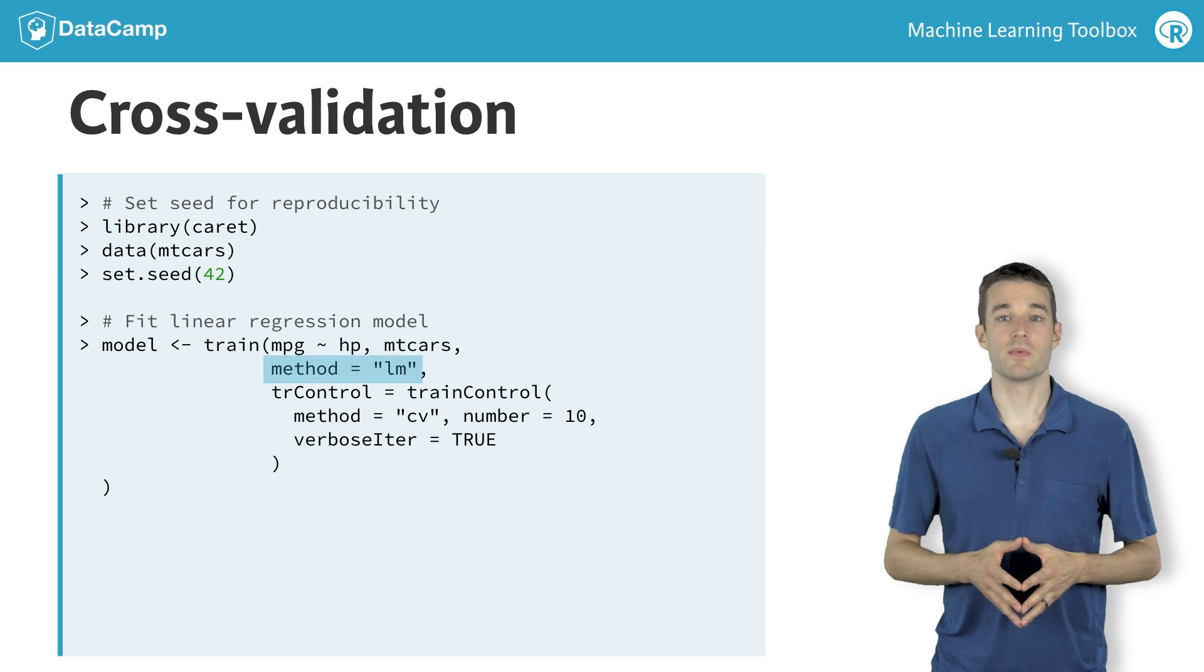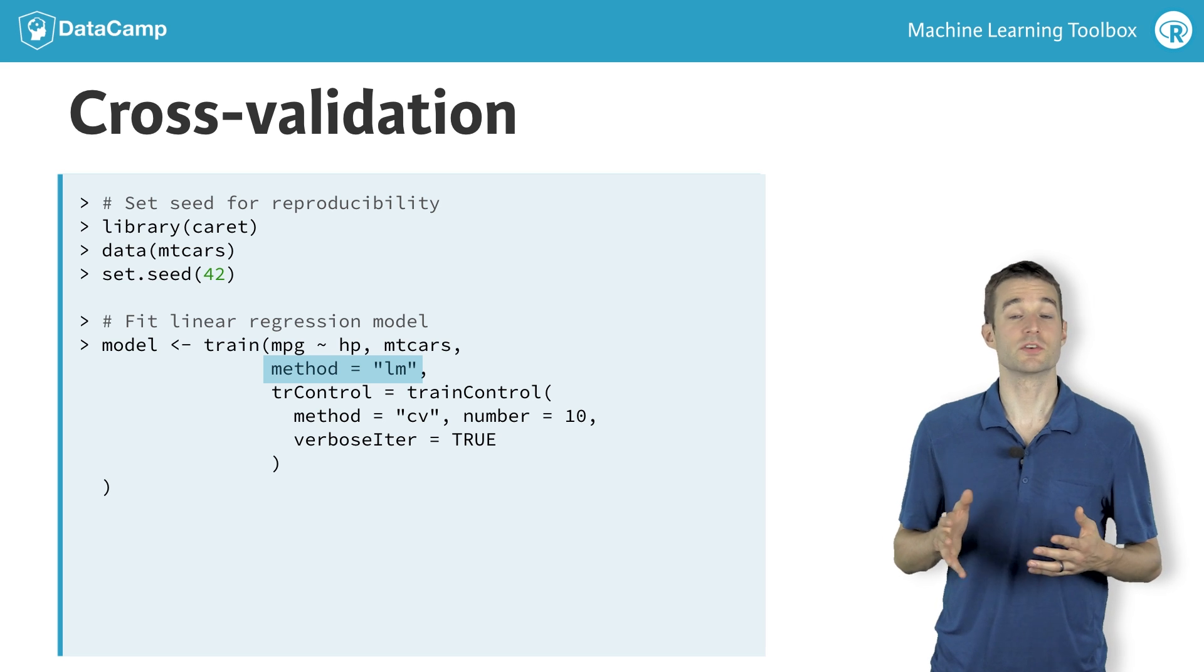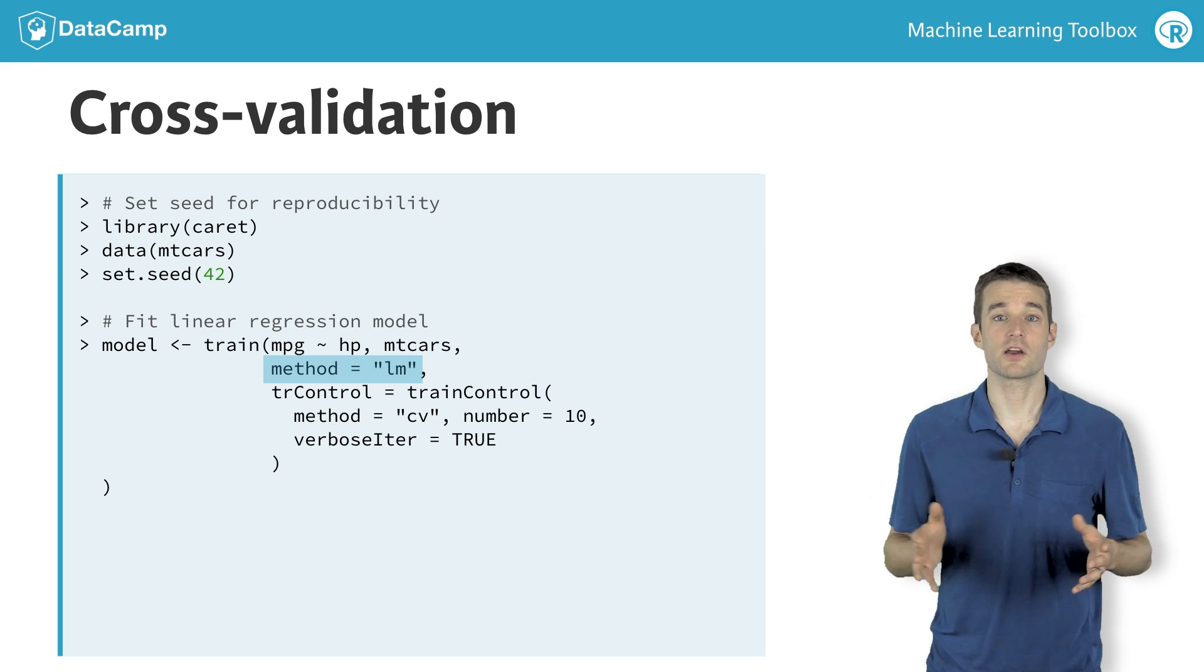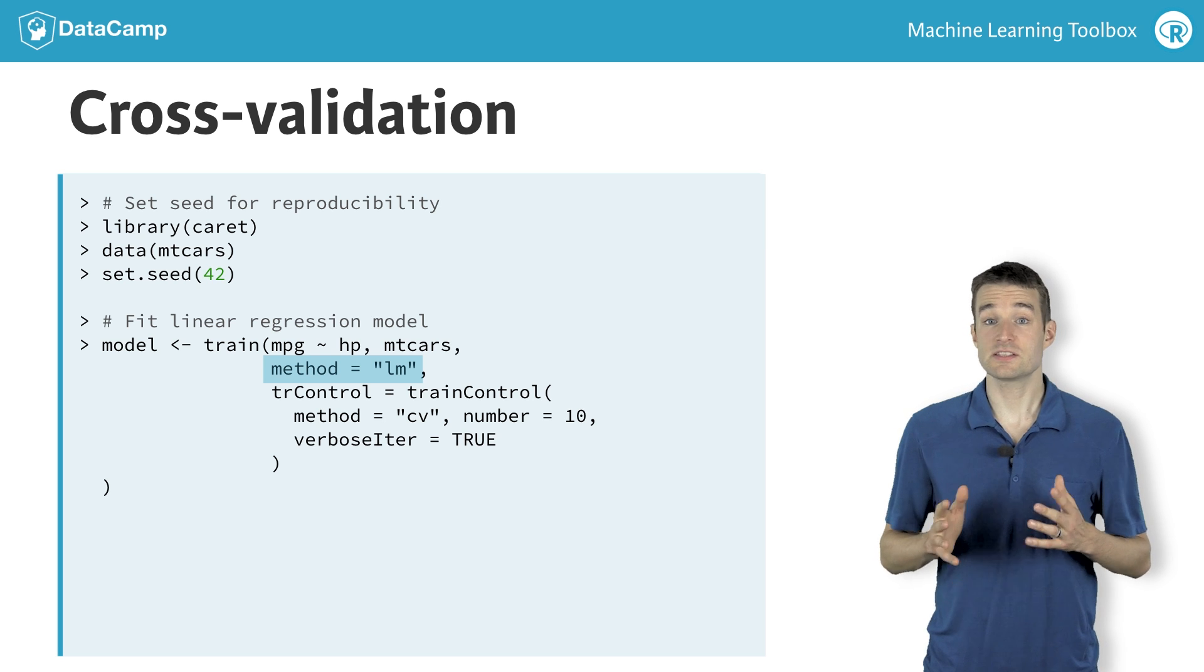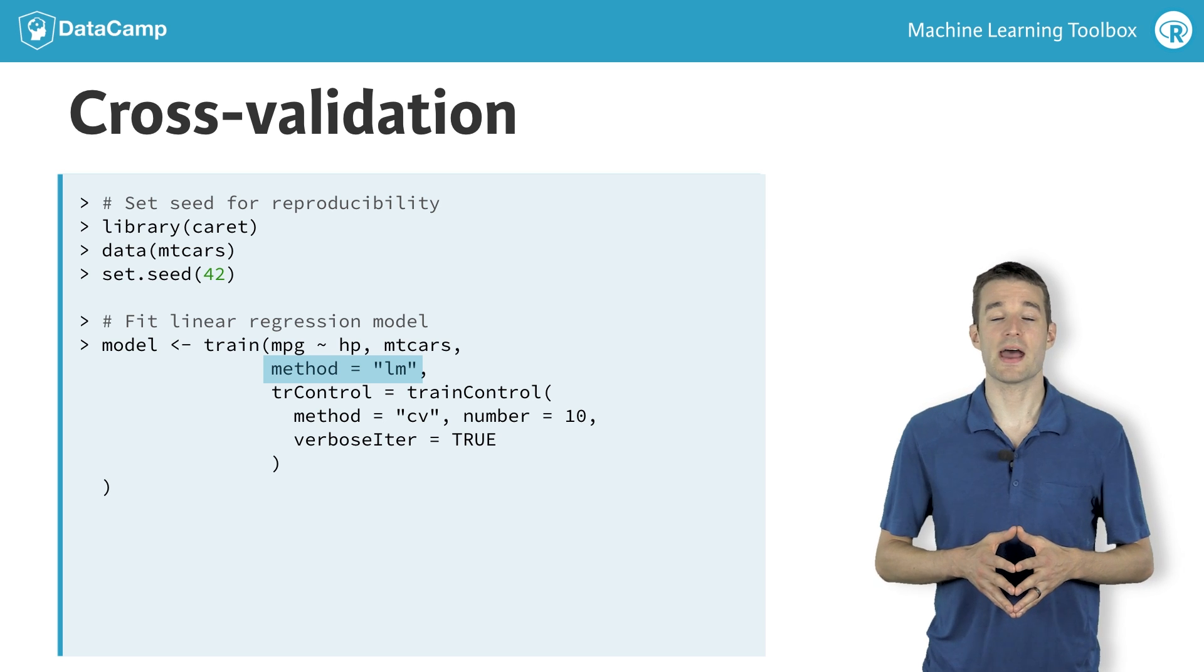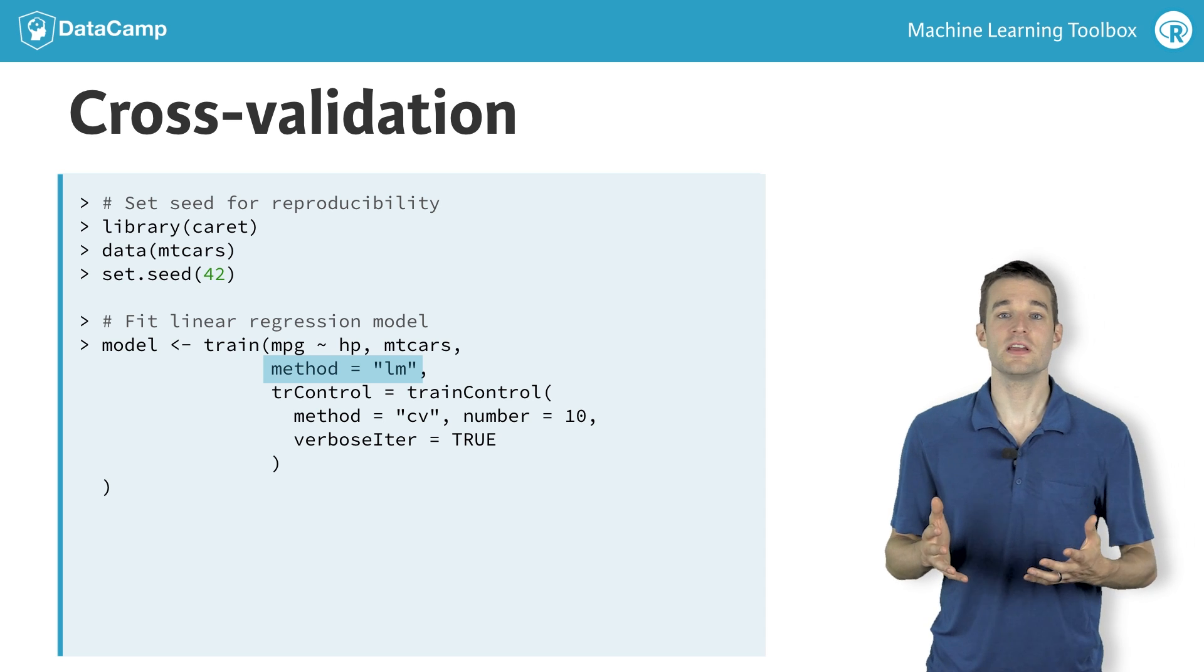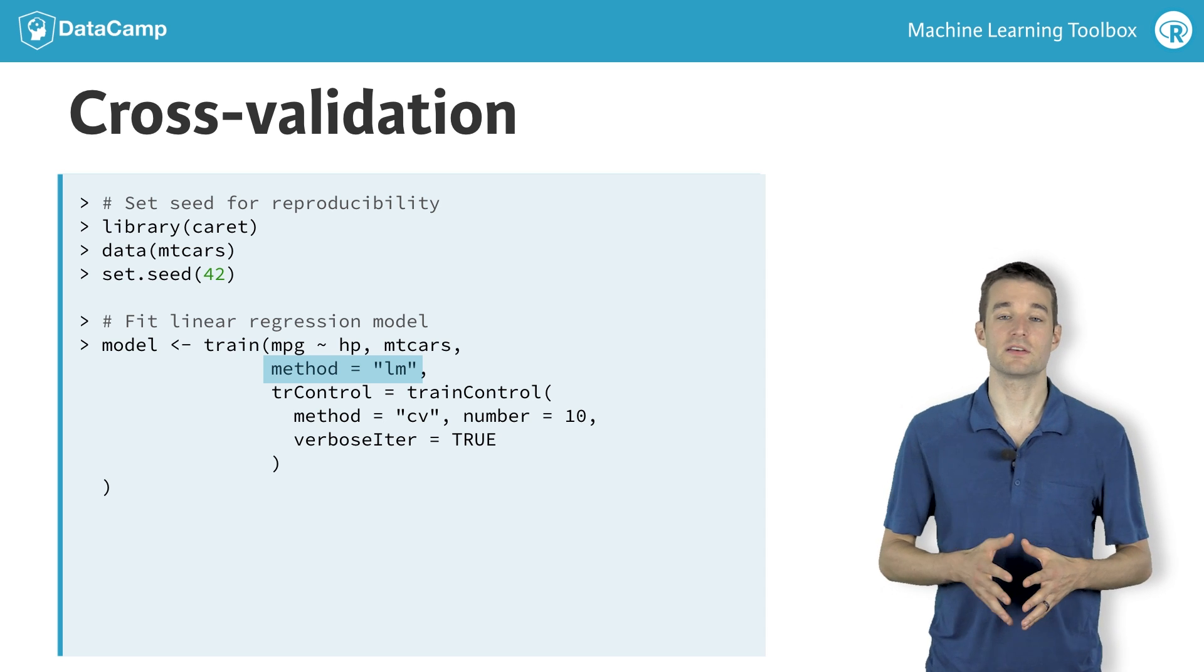In this case, we fit a linear regression model, but we could just as easily specify method equals RF and fit a random forest model, without changing any of our code. This is the second most useful feature of the caret package behind the cross-validation of models. It provides a common interface to hundreds of different predictive models.